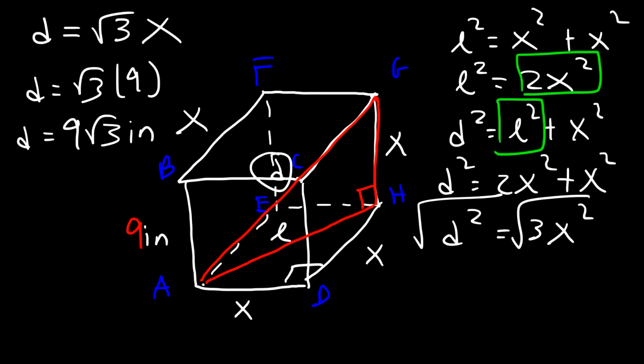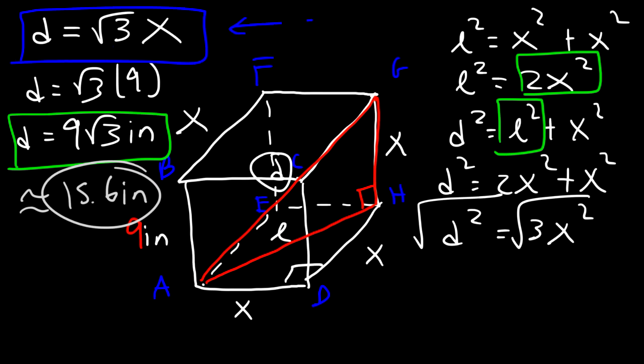So that's the exact answer. And the decimal value for that is about 15.6 inches. So now you know how to calculate the diagonal length of a cube if you're given a side length.